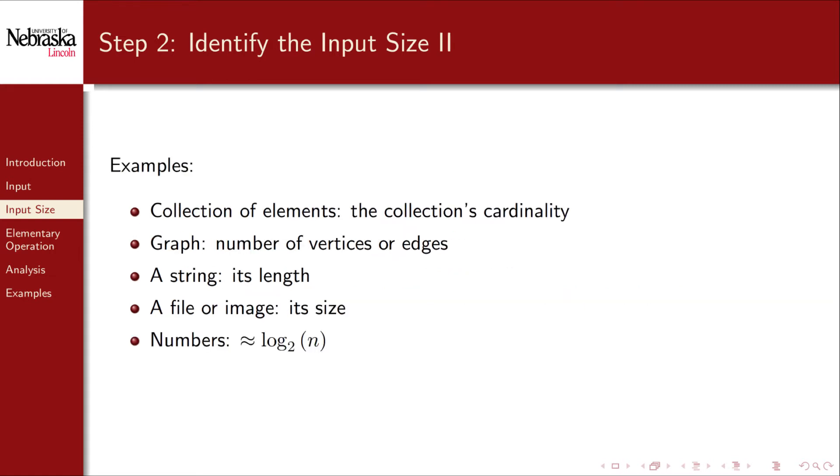Here are some examples. If the input is a collection, then the natural input size is the size or cardinality of the collection. If the input is a graph, we can count the number of vertices or edges in it. For strings, their length is a natural size measure. For files or images, the number of bytes or pixels may be appropriate. For numbers, such as in Euclid's GCD algorithm, the input size is actually the logarithm of the number. That is, the number of bits that are required to represent N in memory. For more details on why this is, we've provided a supplementary video.